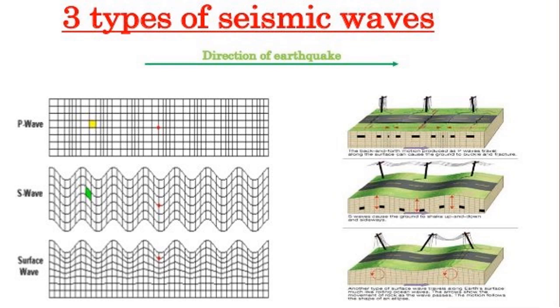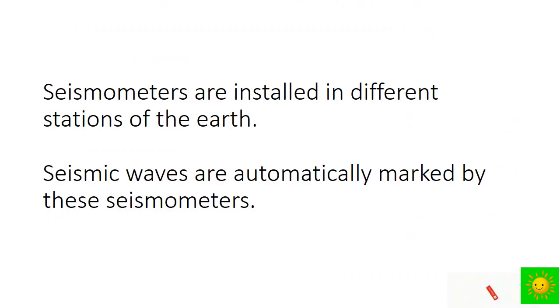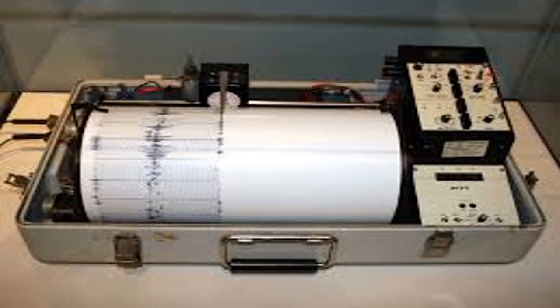A seismometer is installed in Pallekale in Sri Lanka. The speed of seismic waves running through various layers of the earth are different. Information about internal layers of the earth can be obtained by measuring those speeds. You can see three types of seismic waves in this picture.